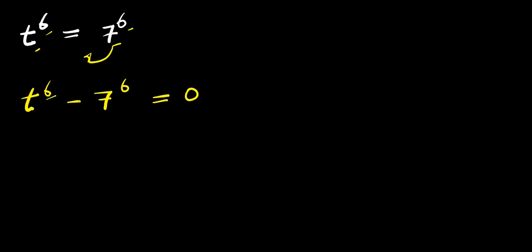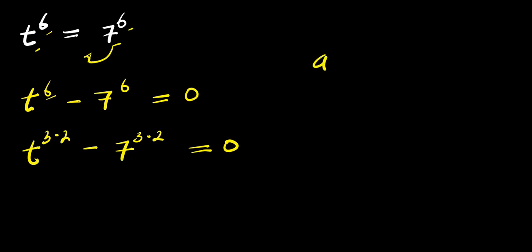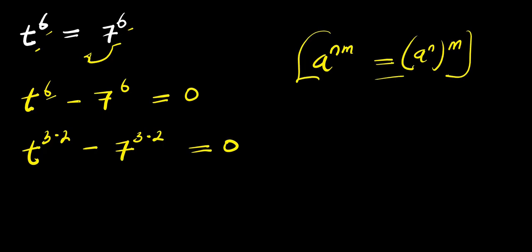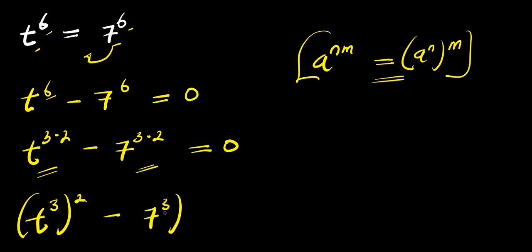Now we can express this exponent of 6 as 2 times 3. So we have t to the power of 3 times 2, minus 7 to the power of 3 times 2, and this equals 0. Using the identity that a to the power n times m equals a to the power n, all raised to the power m, we apply this here and here. That means we have t to the power of 3 raised to the power of 2, minus 7 to the power of 3 raised to the power of 2, and this equals 0.